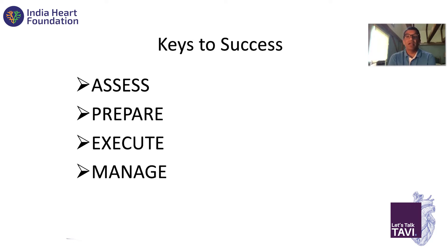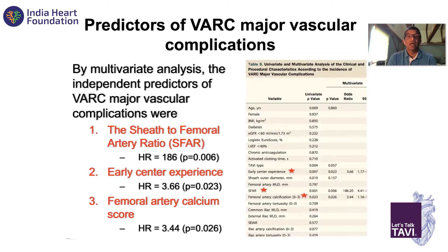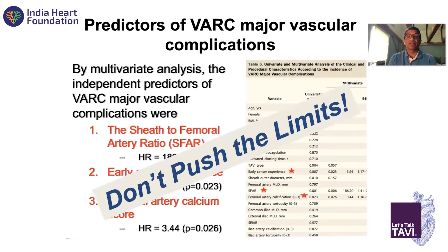And then if you do have complications, manage them percutaneously and try to avoid any surgical approach if they can be managed percutaneously. When you're assessing risk, it's about vessel size. The sheath-to-femoral artery ratio above 1.05 — vessels will dilate a little, but if they're atherosclerotic they won't dilate as much. If you have too big a sheath and too small a vessel, your risk of vascular complication goes up. But as we've seen from cases, you can do vessels down to 4, but you have to be prepared to stent and manage any vascular complication.